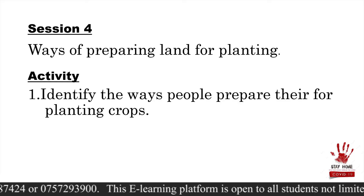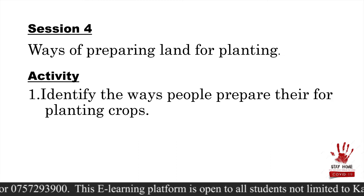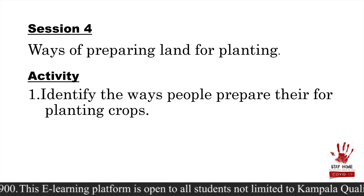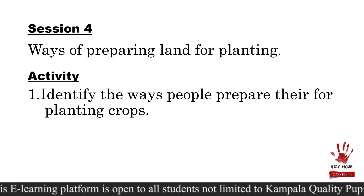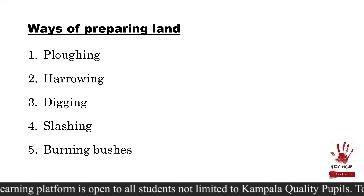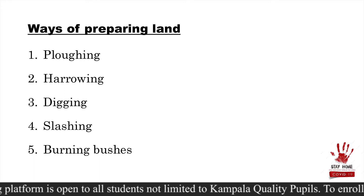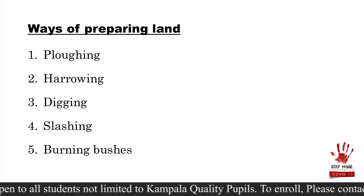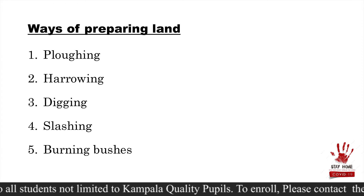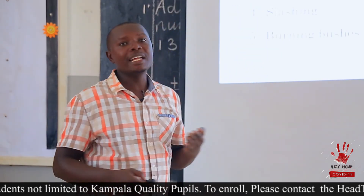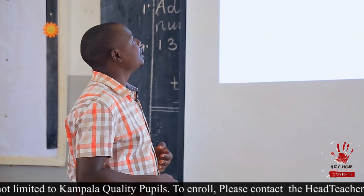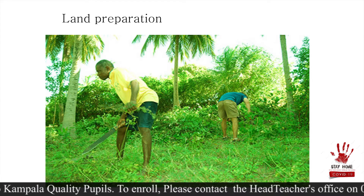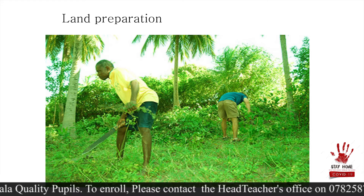Let's look at land preparation. What are the ways that people use to prepare the land for planting? One, by plowing; two, harrowing; three, digging; four, slashing; and five, the controlled burning of bushes — not just setting fire on a bush. These are the ways people prepare land for planting. This image shows one of those ways — you can see this person is cutting a bush, trying to prepare the land for planting crops.